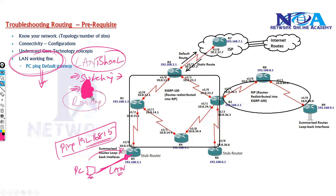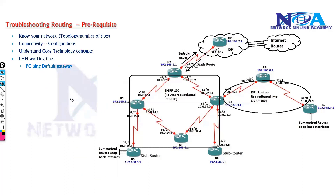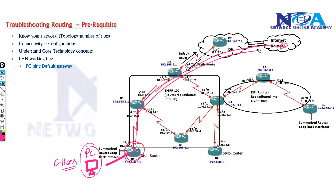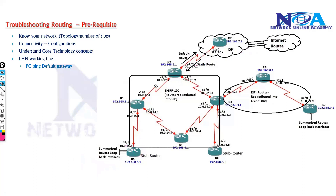We are trying to troubleshoot the routing part, assuming the LAN is perfect, so we can jump into WAN troubleshooting or routing troubleshooting. You also need to check how many users are facing the problem — if only one particular user has the problem, the issue might be with that specific PC. But if all users are facing the problem, there may be a centralized issue with the router or internet reachability. At this point we assume the LAN is perfect and are not getting into the LAN part.